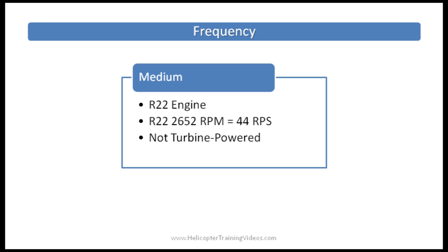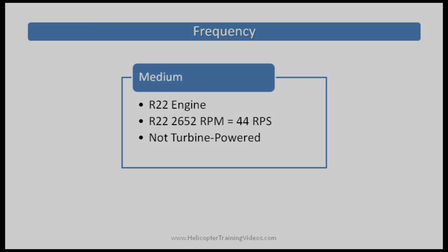In a turbine powered helicopter, a medium frequency would be associated with the tail rotor. That's also how the FAA knowledge tests have the question answered. So if you see a question on the FAA written asking what you would associate with medium frequency, you would say tail rotor, because it's assuming you're flying a turbine engine helicopter.